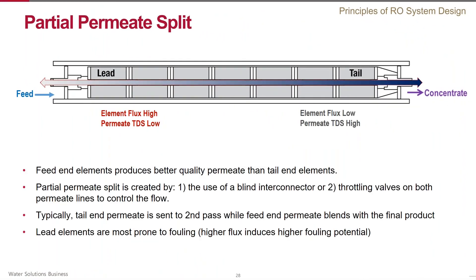Sometimes the so-called permeate split is used in seawater desalination systems to achieve better management of the product. Recall that permeate quality progressively gets worse from lead to tail element in the pressure vessel. To take advantage of the better permeate quality in the front, permeate is collected from both sides of the vessel: low-TDS front permeate is sent directly to the final product line, while high-TDS back permeate is treated with the second pass. Physically, this can be done using a blind interconnector separating two consecutive elements, or by throttling valves on both permeate lines to control the flow.